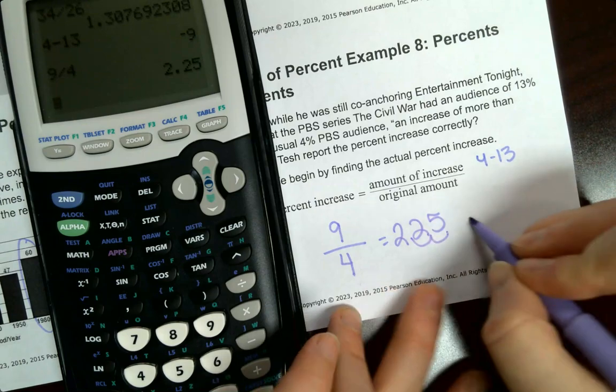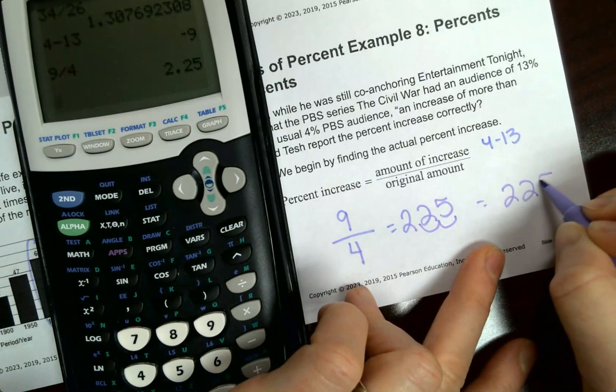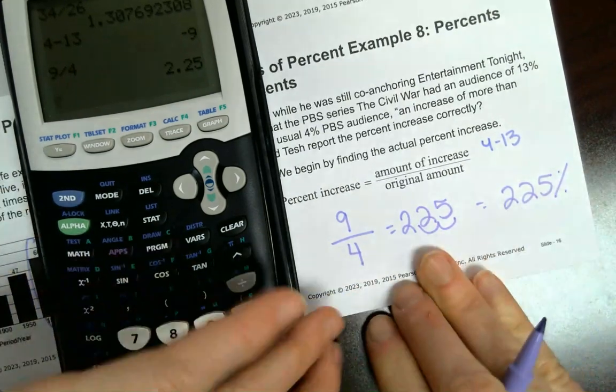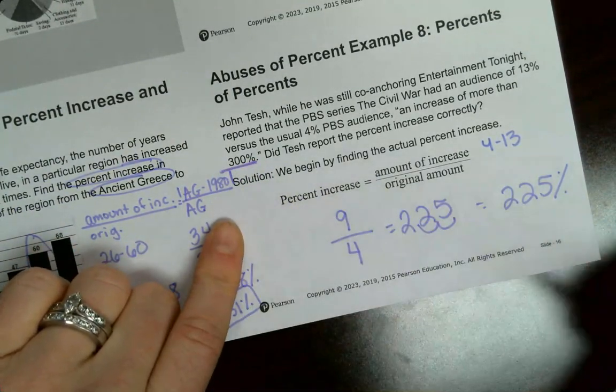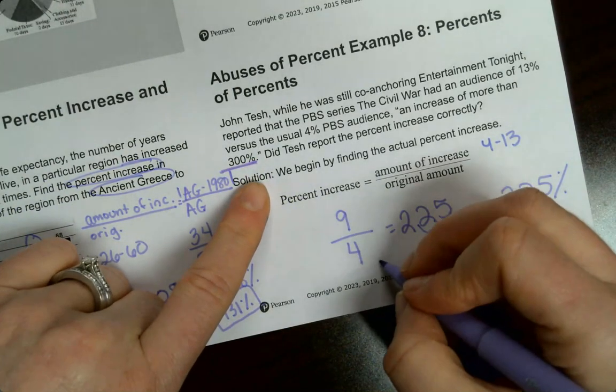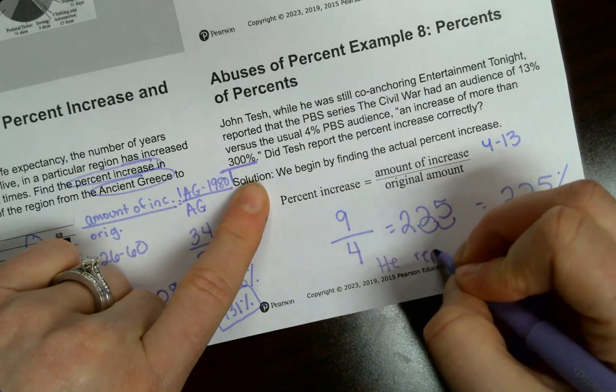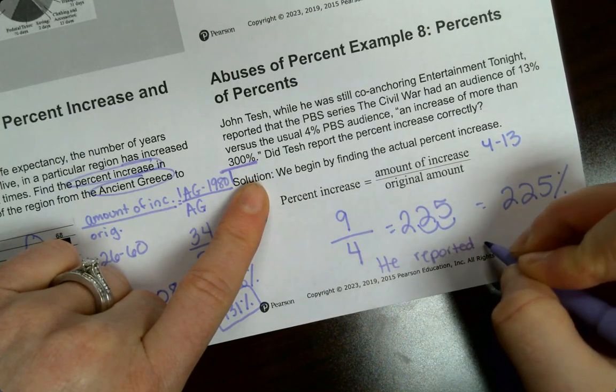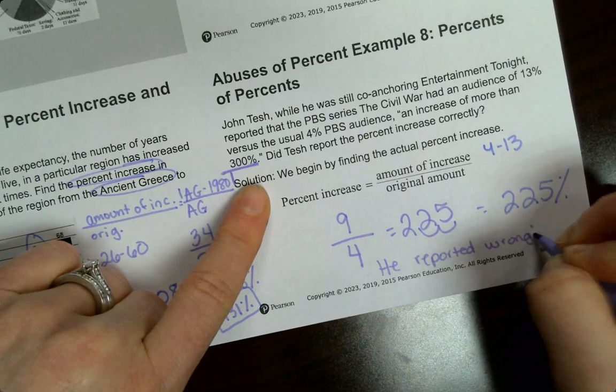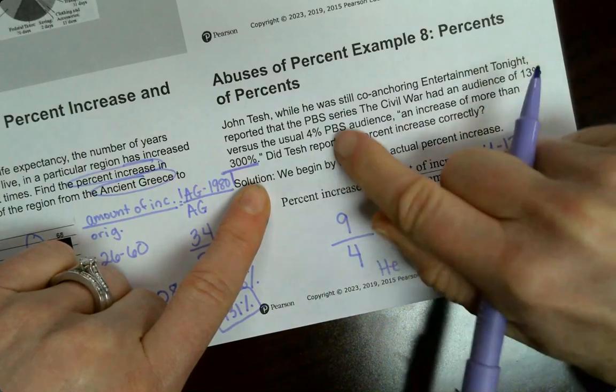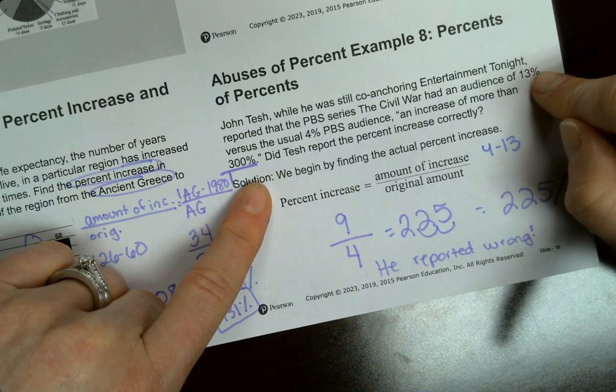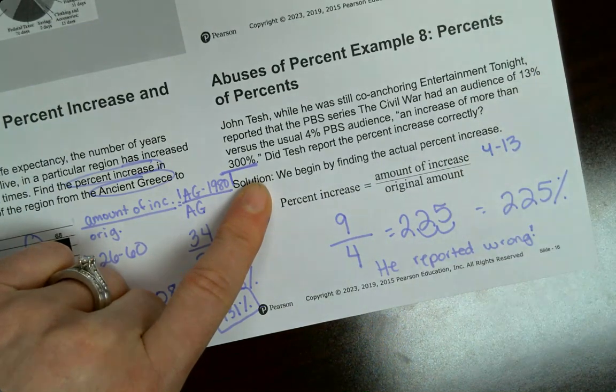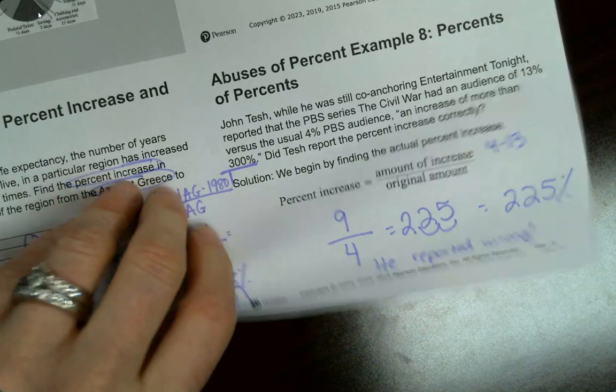Move your decimal over 1, 2. So that's 225 percent increase. So him reporting that it was 300 percent is wrong. He was just multiplying 3 times something to get close to 13. But that's not how it works. It's amount of increase over the original amount. But that's it. So that's what we're doing.